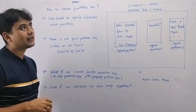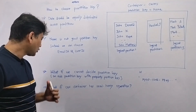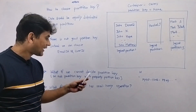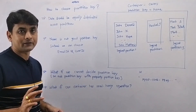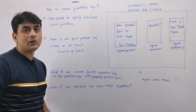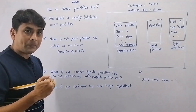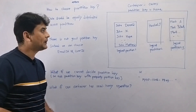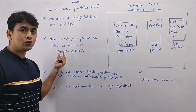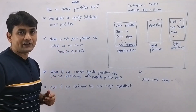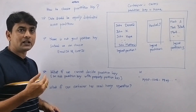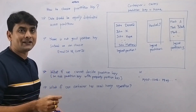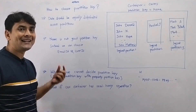Finally, when choosing a partition key, we also need to consider whether our Cosmos container has write-heavy or read-heavy operations. For a read-heavy operation, we can choose a partition key based on a property that will appear in our WHERE clause. For example, if most queries have a condition like WHERE email ID equals XYZ, then we should choose email ID as the partition key.